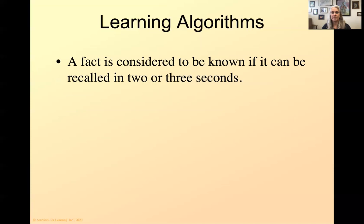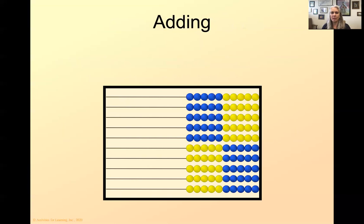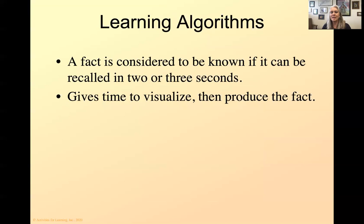A fact is considered to be known if it can be recalled in two to three seconds. This gives the students, the children, time to figure out how to do something, gives them time to visualize and then produce the fact. So let's look at some of these using an abacus. So with adding, I've got four plus three, four plus three more equals, oh, I've seen that number before, that's seven. And the children can actually, it's a lot faster to do this than doing four plus three is four, five, six, seven. What was the question? You can see it this way, four plus three is seven. So like I said, it gives the children time to visualize and then produce the fact. And visual strategies help the children learn their facts.